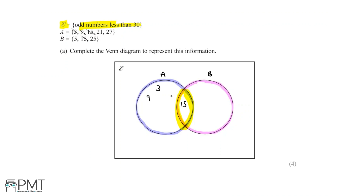Next, we have 21 and 27. Neither 21 nor 27 are in set B — they're only in set A, so we fill in these values in the circle for set A. Now looking at set B, we've already placed 15, so we have 5 and 25 remaining. 5 and 25 are only in set B and not in set A, so we write them in the circle for set B.